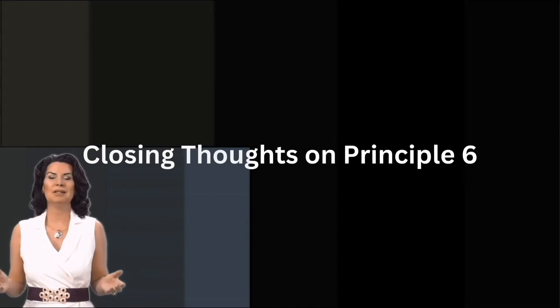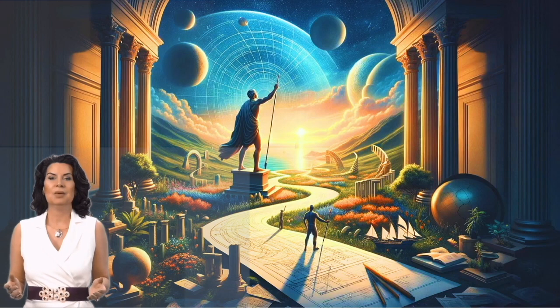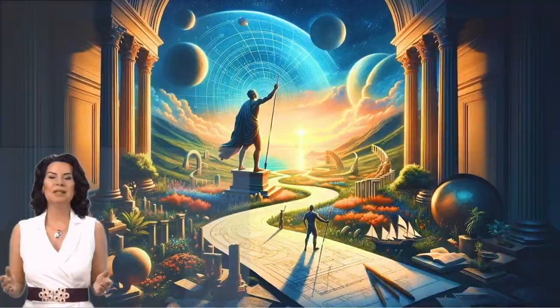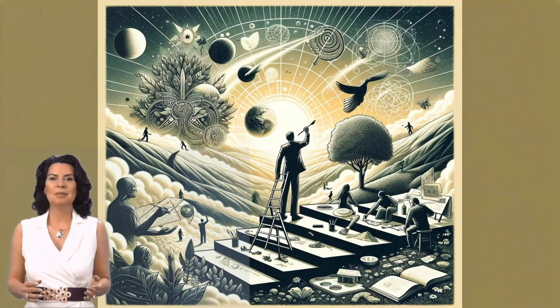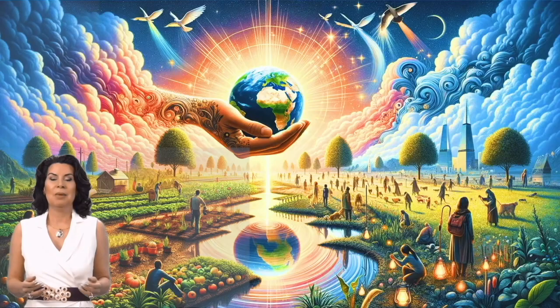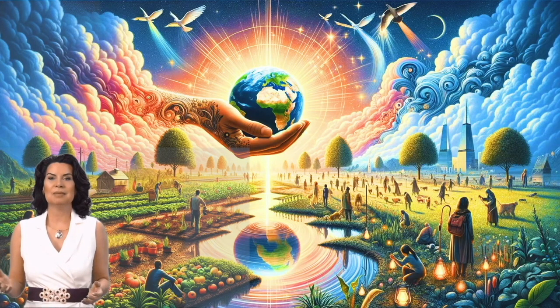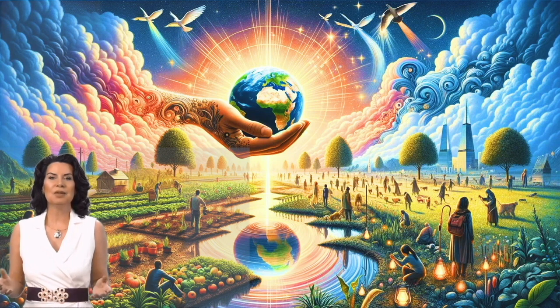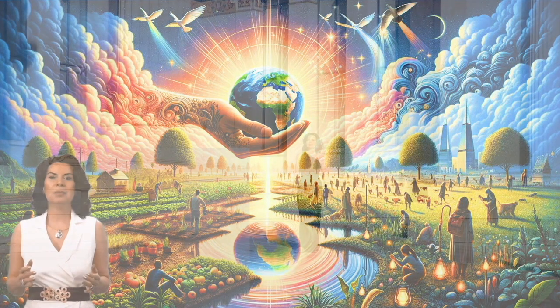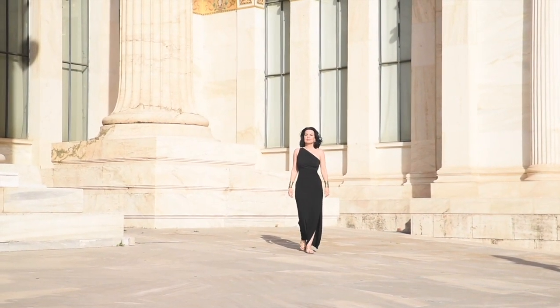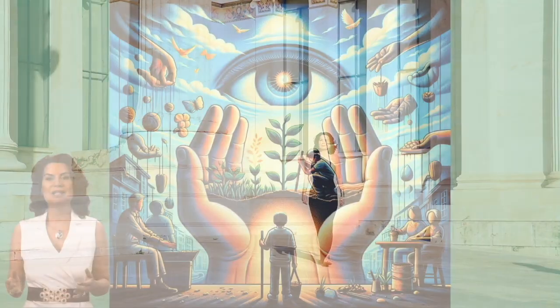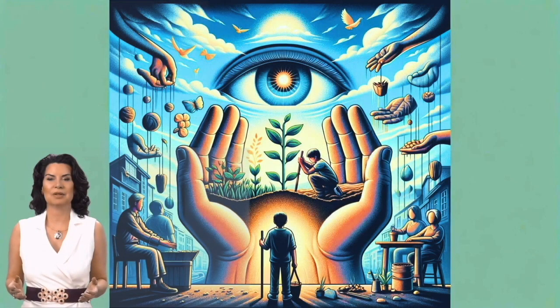Closing thoughts on principle six. The principle of cause and effect teaches us that we are the architects of our future. By understanding and respecting this universal law, we can craft a life of purpose and meaning, creating positive outcomes, not only for ourselves, but for the world around us. I invite you to share how you've observed the principle of cause and effect playing out in your life. Are there moments when you've seen the direct results of your actions?